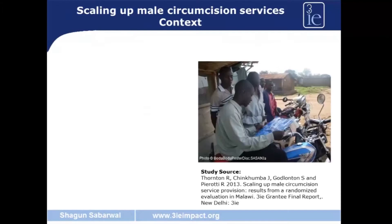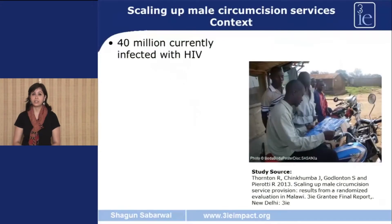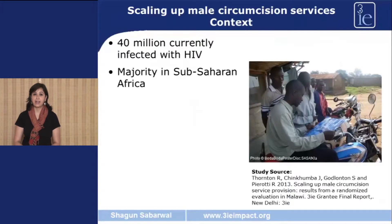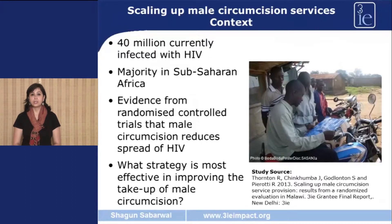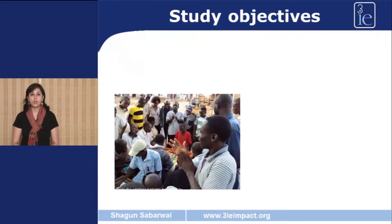I would now like to use a case study to illustrate how an impact evaluation of a health program is actually done. I am using a 3IE funded study that looked at increasing the adoption of male circumcision in Malawi. Before I begin with the actual evaluation, I would like to say a little bit about the context. Around 40 million people around the world are infected with HIV, and the majority are residing in sub-Saharan Africa. Evidence from randomized controlled trials shows that male circumcision can actually prevent the spread of HIV infection. This particular study aims to fill the gaps in knowledge about adoption of voluntary male circumcision.